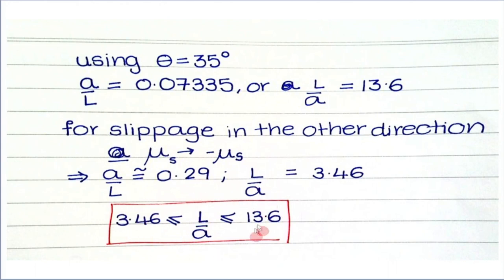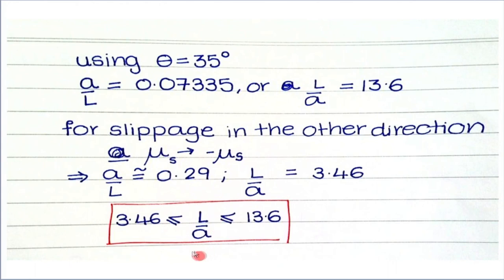In summary: the rod is in stable equilibrium under load P when 3.46 ≤ L/A ≤ 13.6. Below L/A = 3.46 the impending motion is clockwise and upward, above L/A = 13.6 the impending motion is anticlockwise and upward — in both cases the rod slips out of equilibrium.